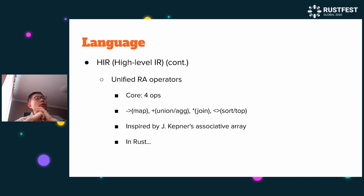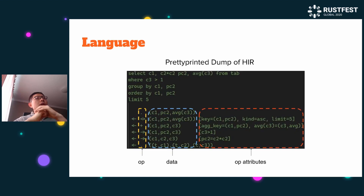A unique and interesting feature of TensorBase is we have unified relational algebra operators. In traditional textbooks there are many relational algebra operators, but here we unify them into four: Map, Union, Join, and Sort — each with their own shortcut. Here is a pretty-print IR where you can clearly see how the IR is transformed from the top-level SQL query.